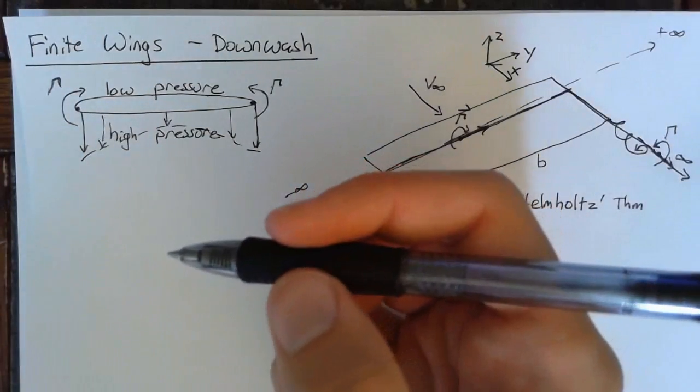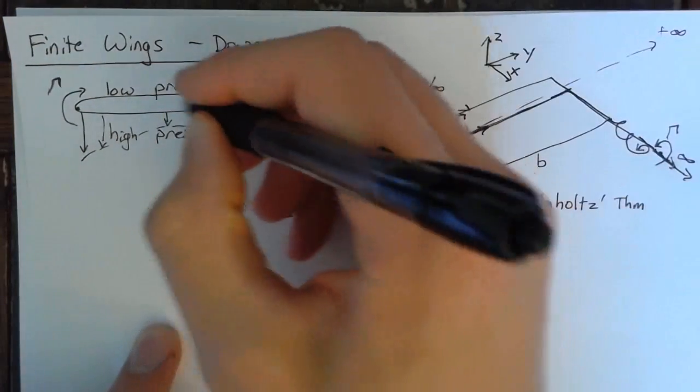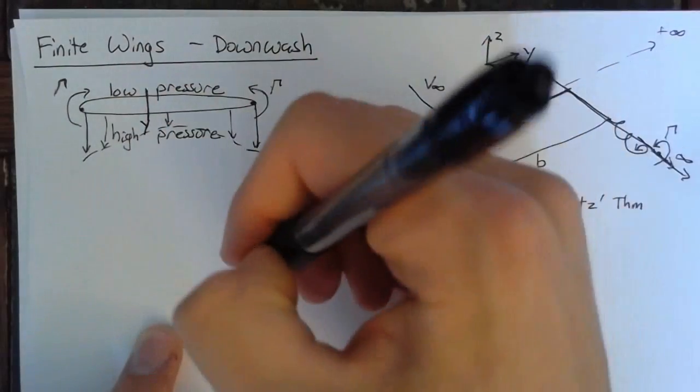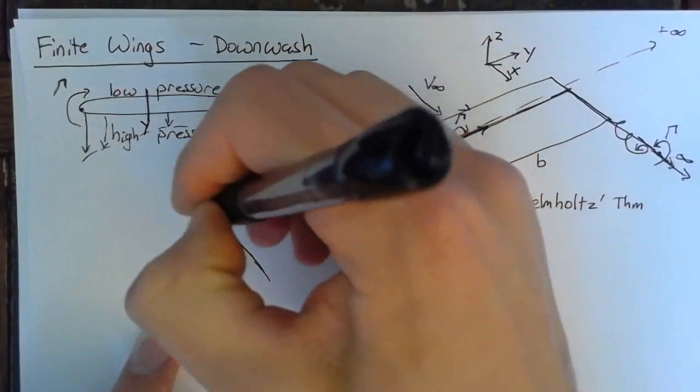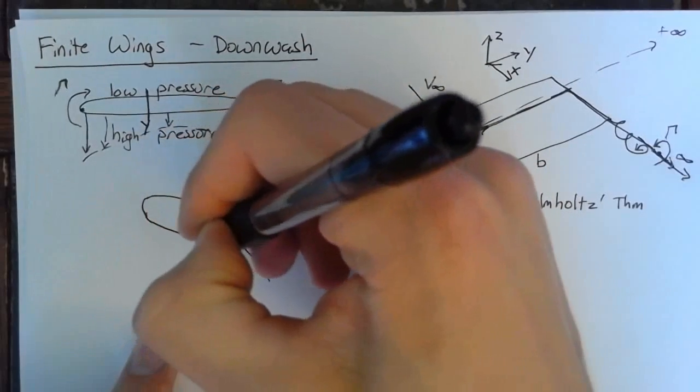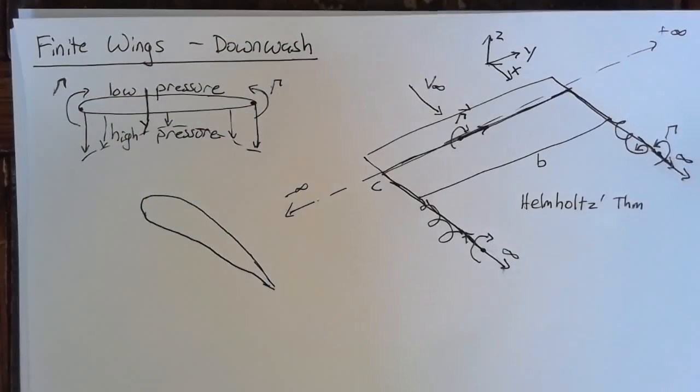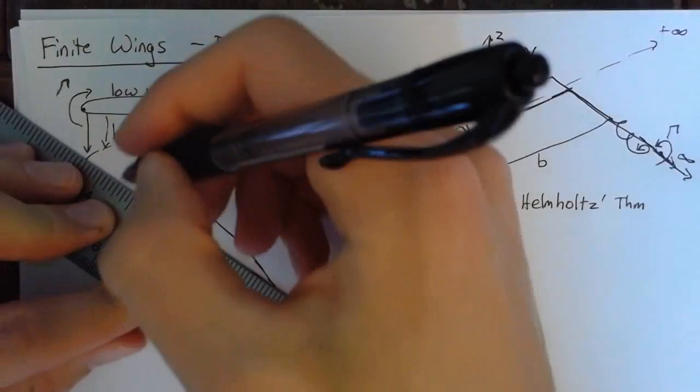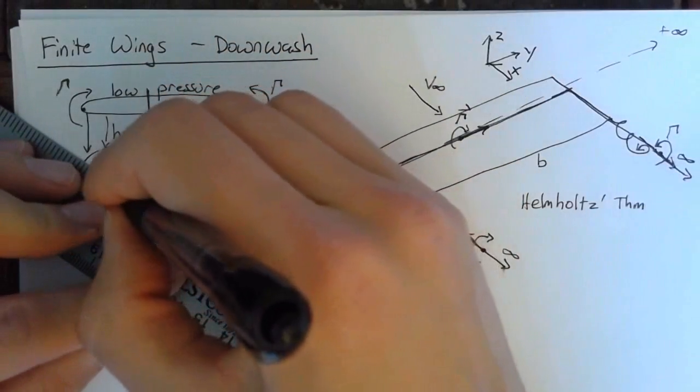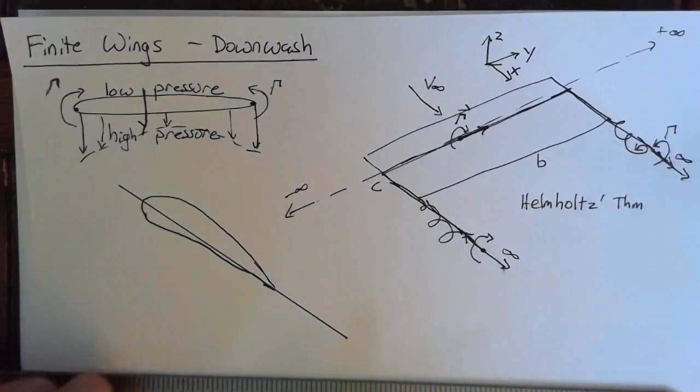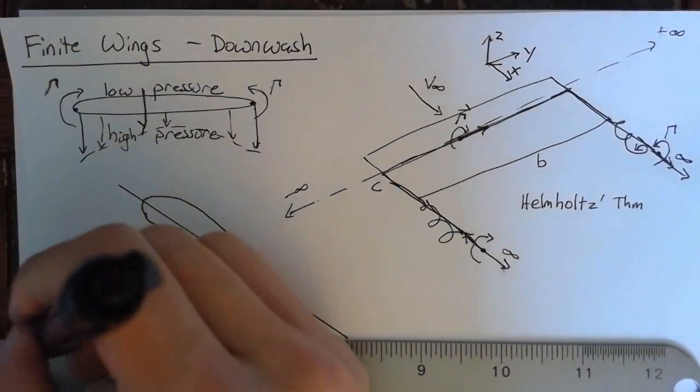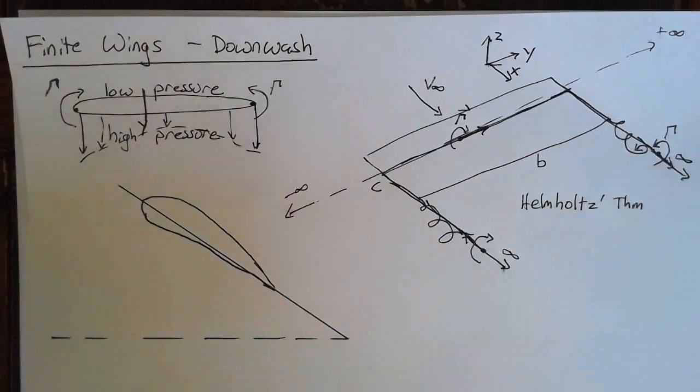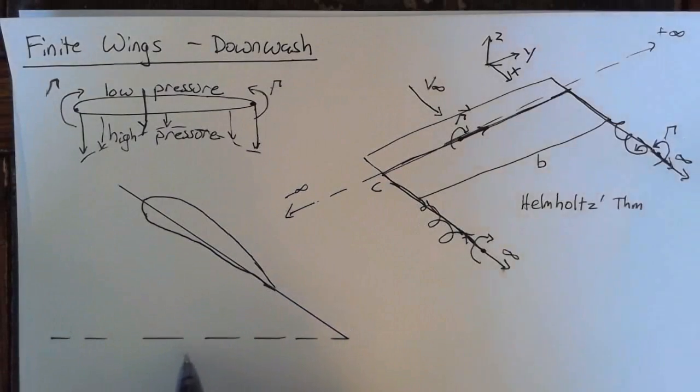Well, first off, let's go ahead and draw our kind of standard situation for a given spanwise location, which is some y. So at some given y, we'll have an airfoil that has some angle of attack with the incoming flow. And obviously, this angle of attack is exaggerated, but we need a lot of room. And let's draw the incoming flow.